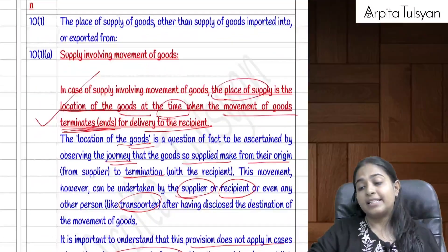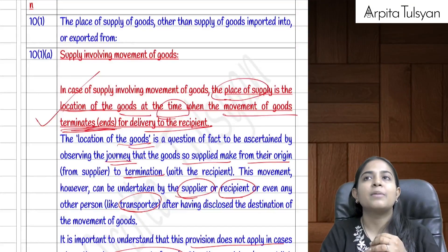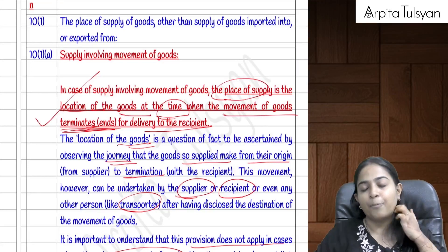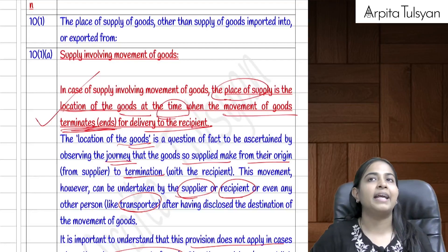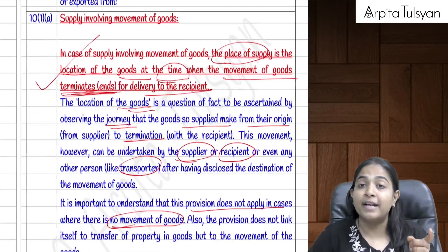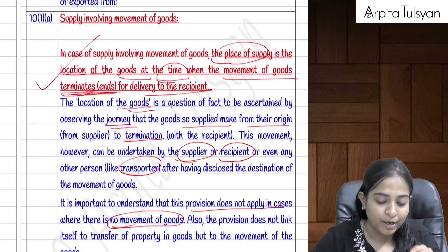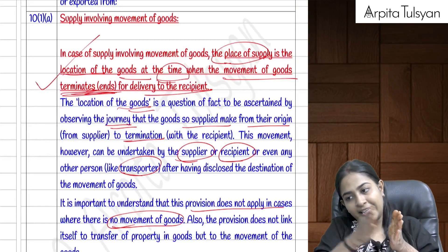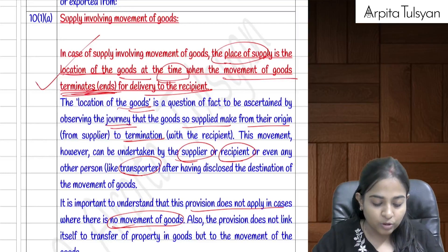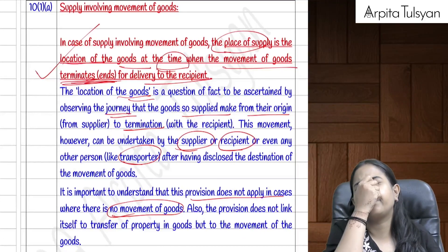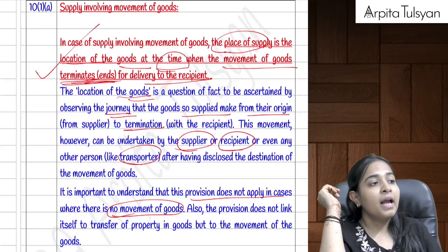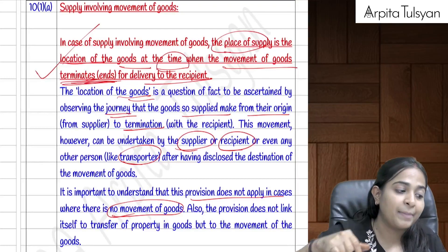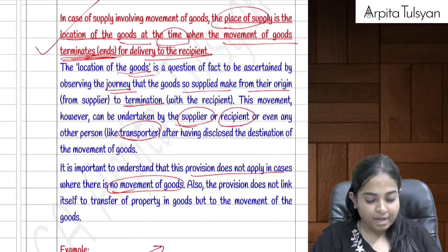For residual cases, Section 10(2) applies. Section 10(1)(a) covers supply of goods involving movement: the place of supply is the location where the movement of goods terminates — i.e., where delivery to the recipient ends. This provision is not applicable when there is no movement of goods.